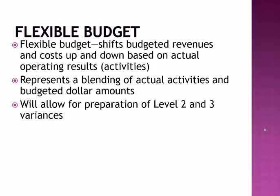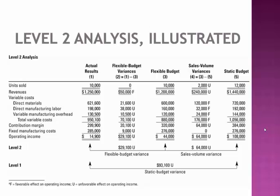Once we've done this, this will allow us to prepare the level 2 and level 3 variances. Those calculations are going to answer for us: why were we off? Were we inefficient in our use of materials, or were we very efficient? What did we do price-wise? Did we overpay? Did we underpay? All of those things can be answered using various variance analysis.